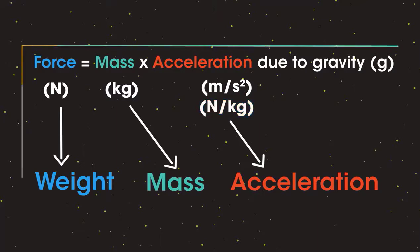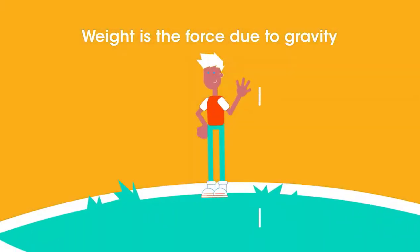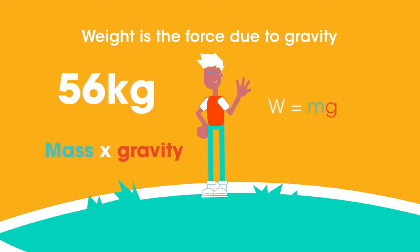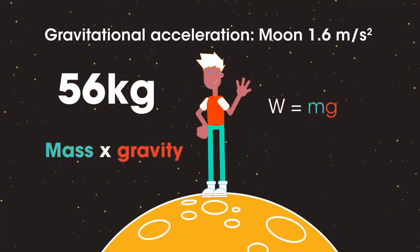So let's now use this lovely equation to find my weight. Weight is the force due to gravity, and that depends upon the masses of the two objects that are attracted. On Earth, my weight is mass times gravity, so roughly 56 kilograms times 10, which is 560 newtons. But what about on the moon? The gravitational acceleration on the moon is only 1.6 meters per second per second. I hope you got 89.6 newtons.